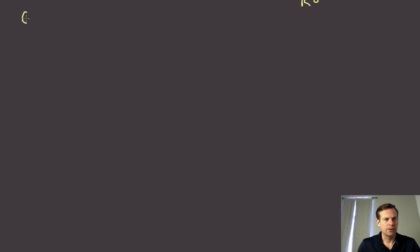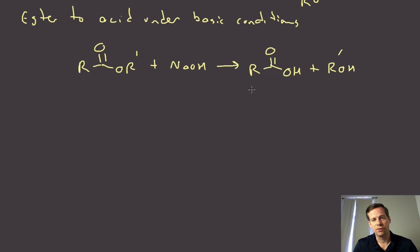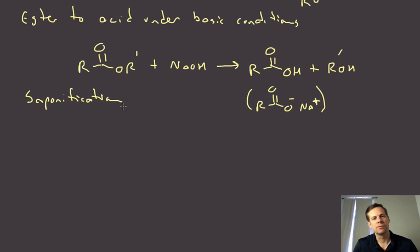So we're going to do ester to acid under basic conditions. What we're going to do here in general is take an ester and treat this with sodium hydroxide or some other hydroxide form, and that's going to regenerate our carboxylic acid and the alcohol that's this portion here. Now I say acid—under these conditions you're technically going to have the sodium carboxylate until you add some proton to protonate that. So technically this is the product, and incidentally this is a process that's known as saponification.